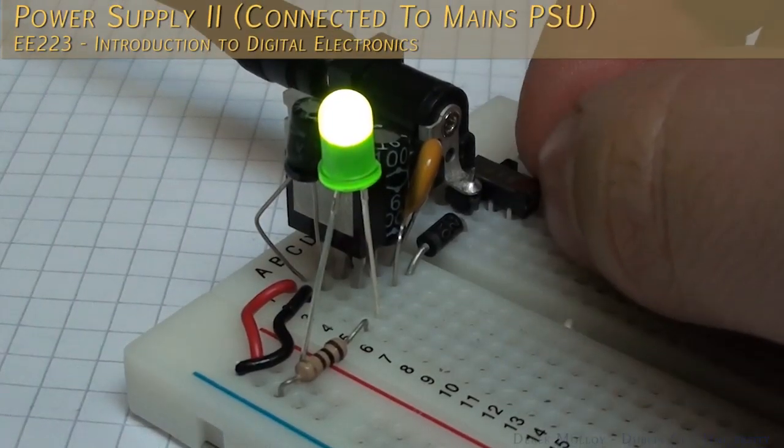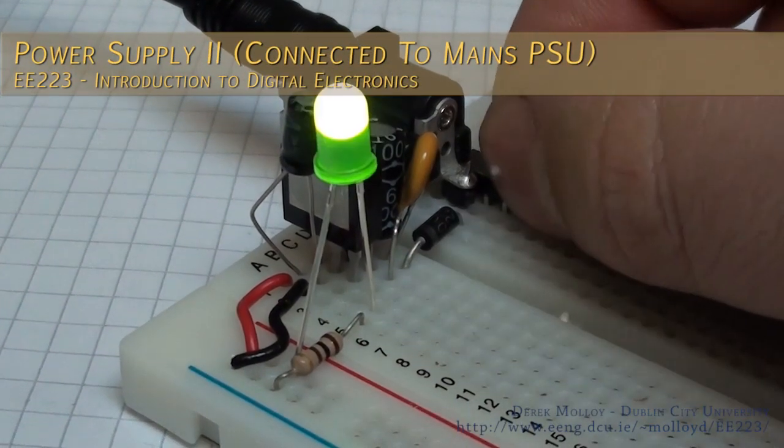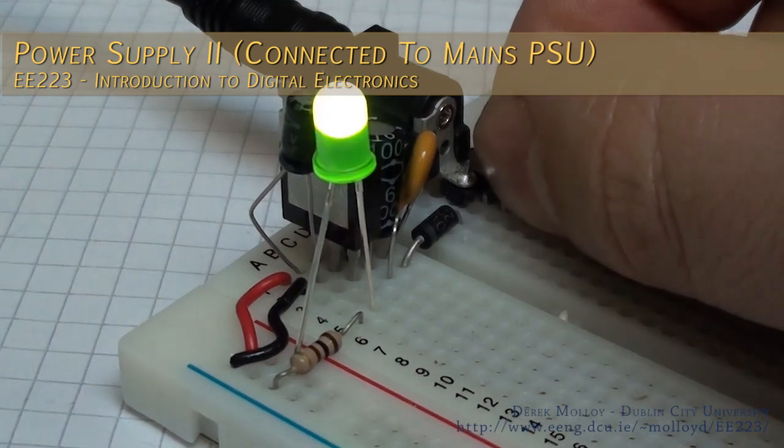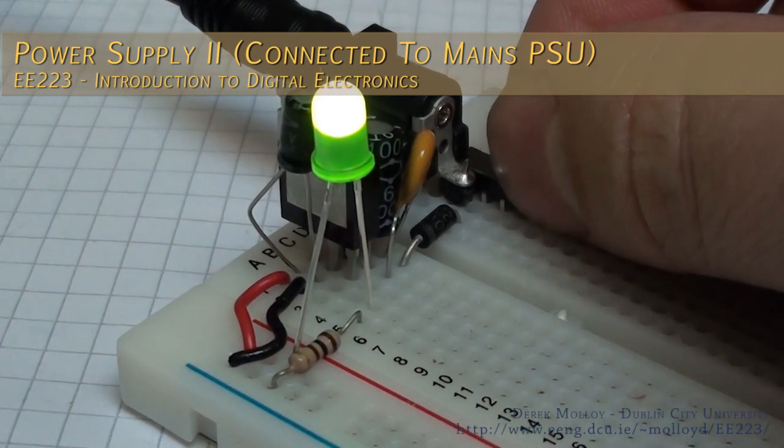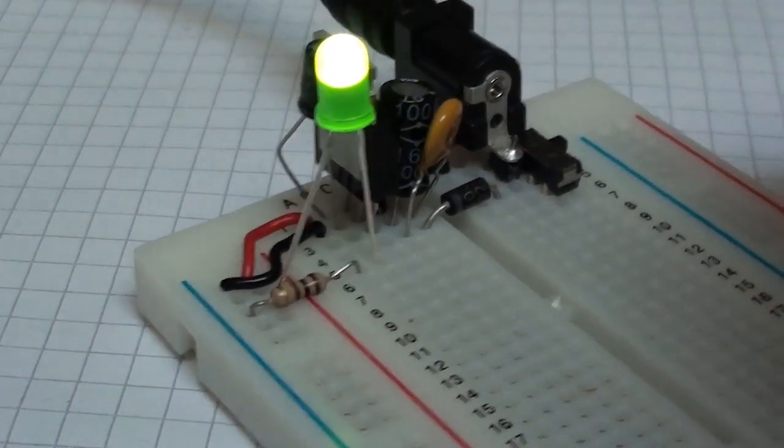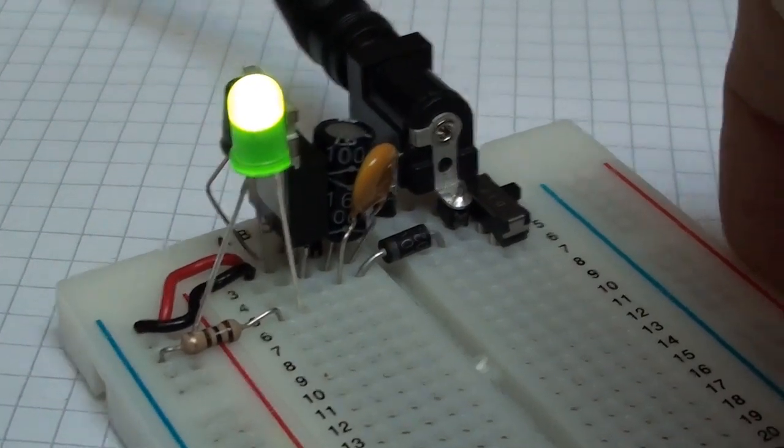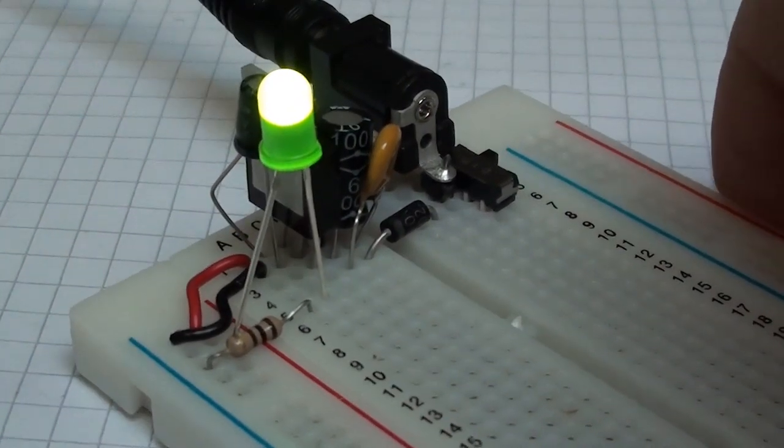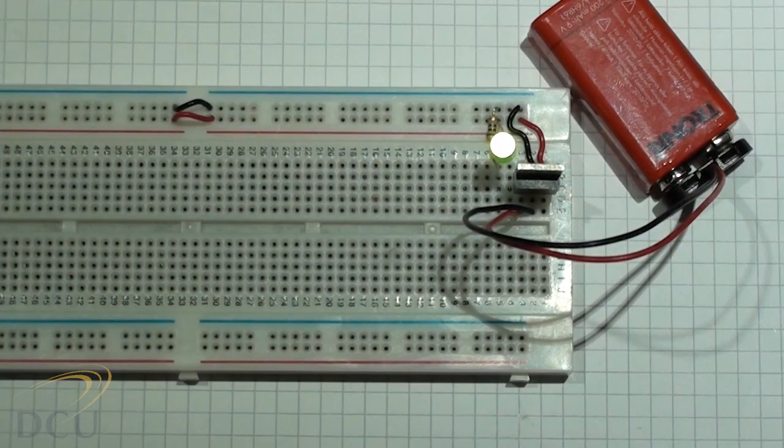In this video I'm going to look at the connection of a mains regulated power supply to our circuit. We're going to use a low-cost 9 volt DC 300 milliamp supply. It's a very cheap supply and allows us to power our circuit directly from mains.